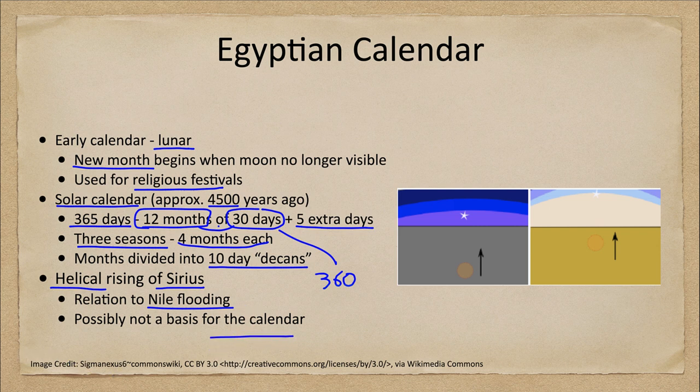That helical rising was generally related to the approximate time the Nile flooded. However, this is a bit uncertain as to how accurate it would have been, since the Nile flooding was not completely regular. It served roughly as a guide, but may not have been the overall basis for the calendar used by the Egyptians.